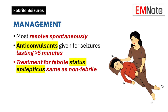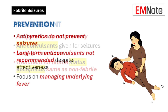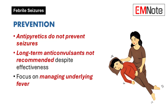For febrile status epilepticus, we're talking aggressive management often with multiple medications to get those seizures under control. Parents often want to know if there's anything they can do to prevent seizures. While acetaminophen or ibuprofen can help bring down the fever and make the child more comfortable, they don't actually prevent febrile seizures. Even if you bring down the fever, it doesn't mean the seizure risk is gone — and that's important to be clear about when talking to parents.